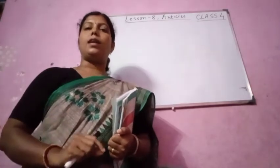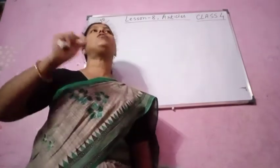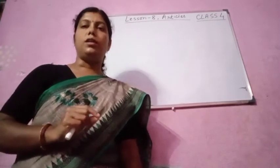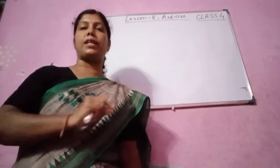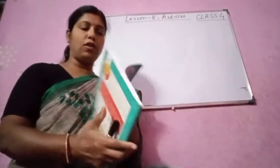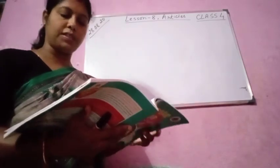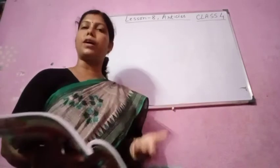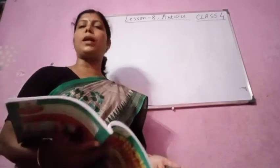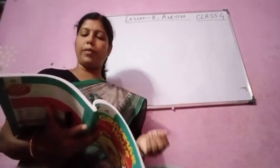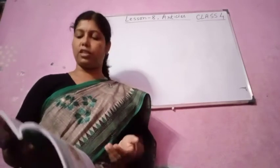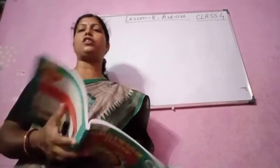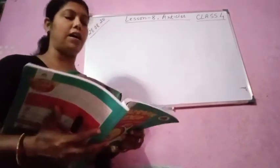Now the also you know where we are using the, where we are using something very particular, something very specific. There we use the. And you have to go through page number 57, use of the, where we use nouns that are one of a kind, only one. Geographical points of the globe, names of rivers, islands, oceans and mountain ranges. We start with the, names of famous buildings, holy books, directions, also we will start with the.